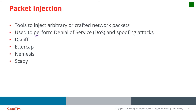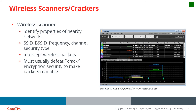Packet injection tools include EtherCAP, Nemesis, CAPI, and DSNIFF. These tools inject or allow frames to be inserted into the network stream, enabling various types of packet manipulation. They are usually used to perform OS or spoofing attacks. Wireless scanners like AirCrack can identify SSIDs — including hidden SSIDs — and gather information such as frequency, channel, and security type. There are also wireless scanner tools that can decrypt passwords encrypted using WEP.